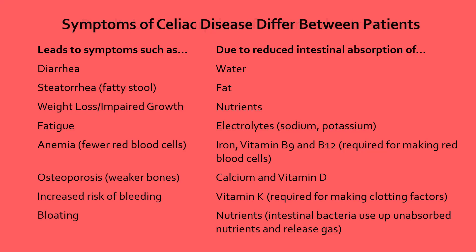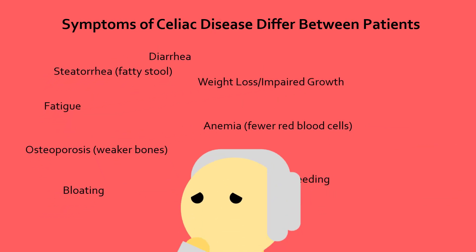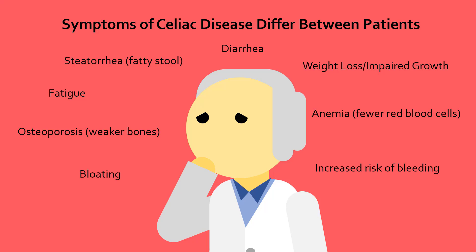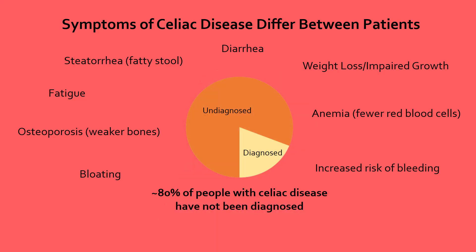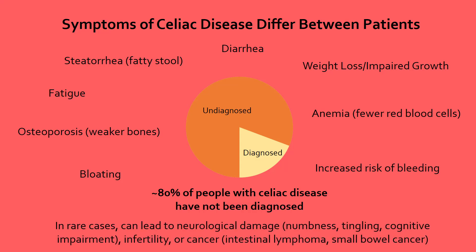Celiac disease can show up as any combination of these symptoms, making it very difficult for doctors to diagnose or even consider celiac disease to be the cause of their patient's discomfort. This is why scientists estimate that around 80% of people with celiac disease have not been correctly diagnosed. This is a serious problem because if left untreated, celiac disease can lead to neurological damage, infertility, or even cancer.